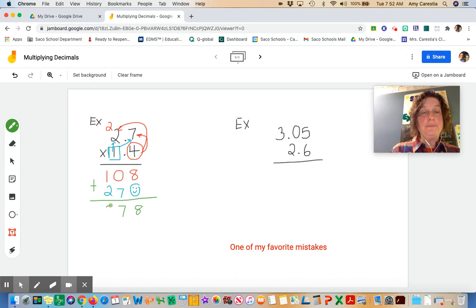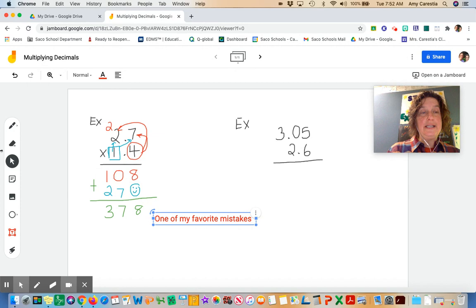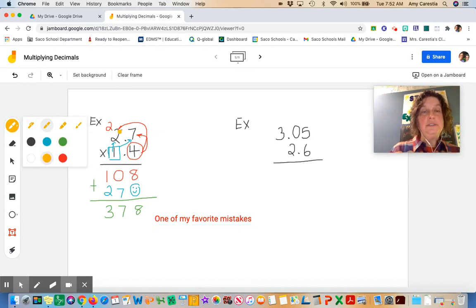Now this is one of my favorite mistakes. Some people would bring down the decimal just as if we were adding or subtracting, and put the decimal there. Unfortunately, that's not how multiplication with decimals works. That only works with subtraction and addition.